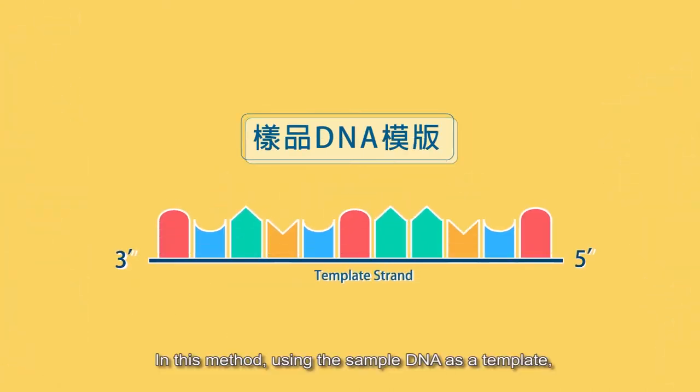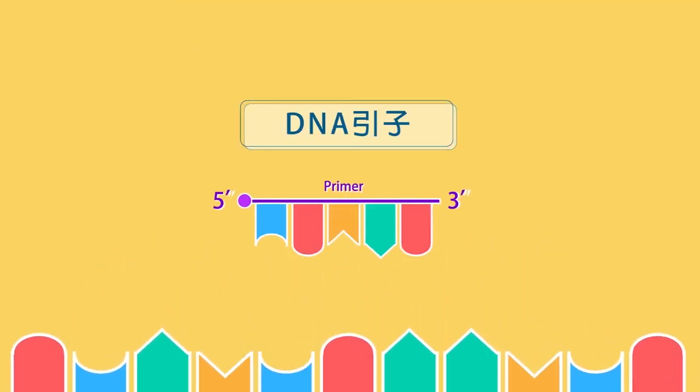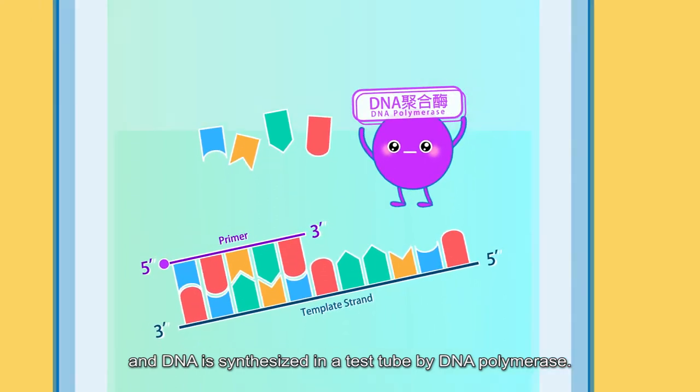Finger Chain Termination Method. In this method, using the sample DNA as a template, a unidirectional DNA primer is added, and DNA is synthesized in a test tube by DNA polymerase.